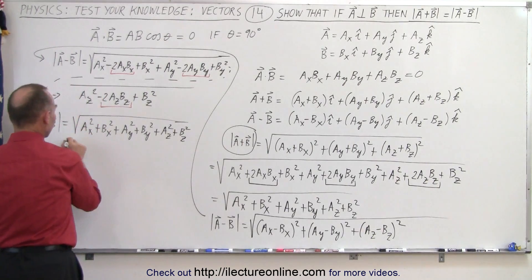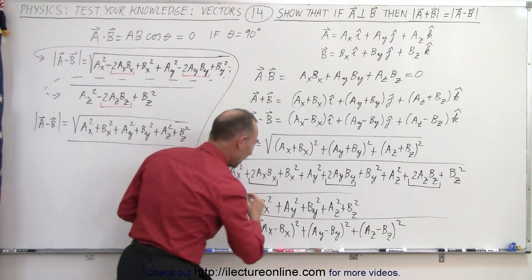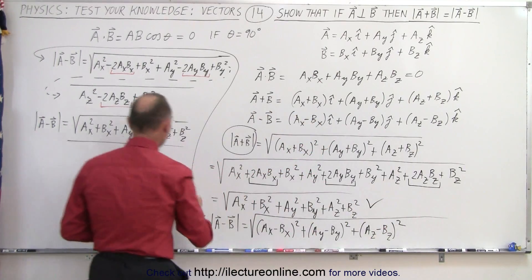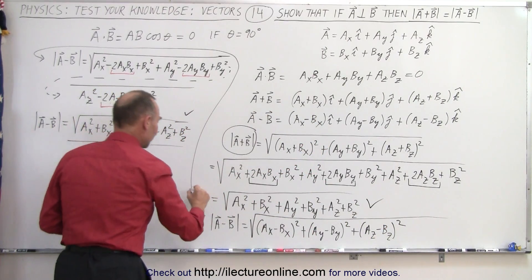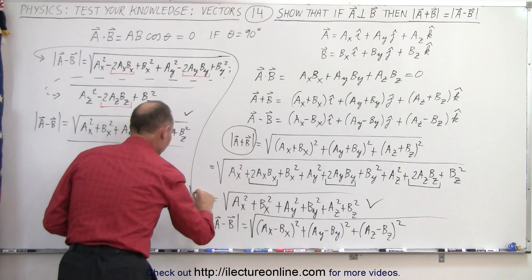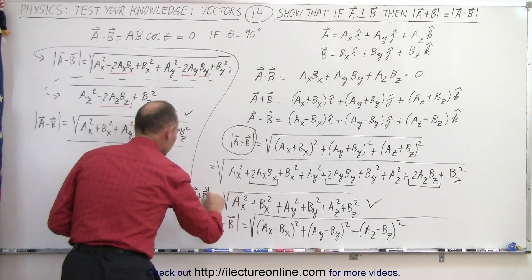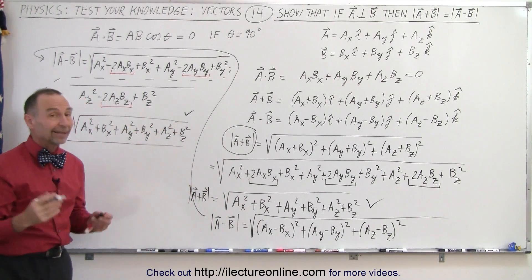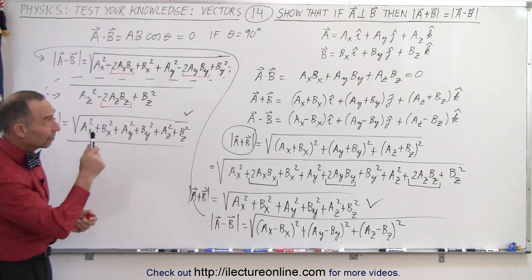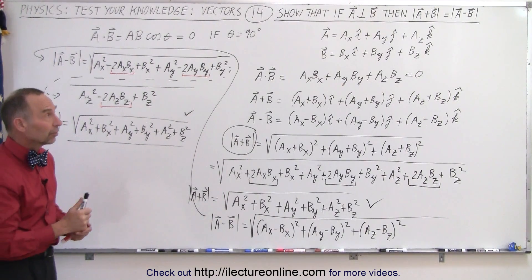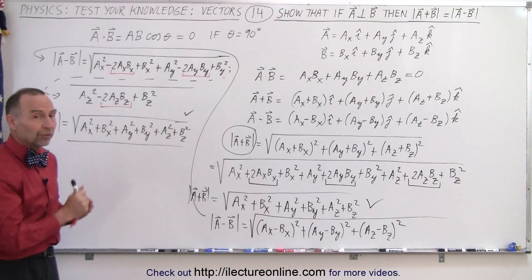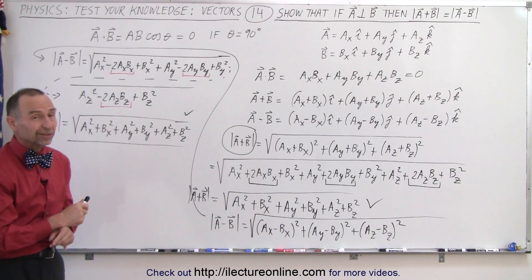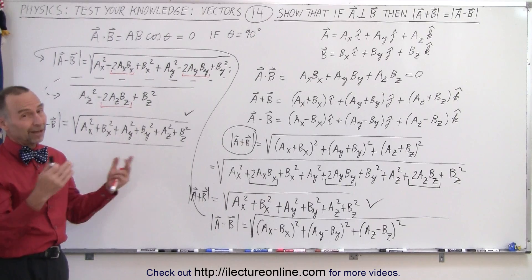Notice that this result is exactly the same as what we obtained for the magnitude of A plus B. Therefore, the magnitude of A plus B equals the magnitude of A minus B. That shows that if two vectors are perpendicular to one another, the magnitude of their sum equals the magnitude of their difference.